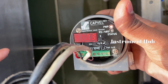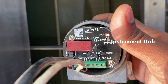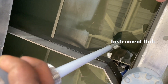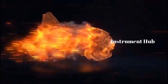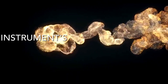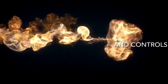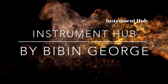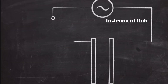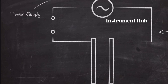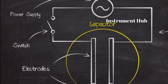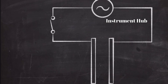Hello guys, welcome to Instrument Hub. Today our new topic is capacitive type level sensor. To explain capacitive level sensing, you must first understand the concept of a capacitor. The capacitor is formed by two electrodes electrically insulated from each other. The electrodes themselves must be conductive, typically made from any metal.